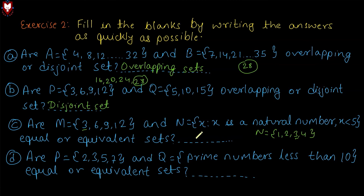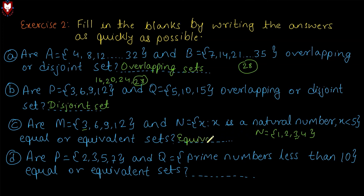So set M is {3, 6, 9, 12} with 4 elements, and set N is {1, 2, 3, 4} also with 4 elements. The elements are different but the number of elements is the same. By the definition of equivalent sets, if the number of elements is the same, the sets are equivalent. So we fill in the blanks: equivalent set.